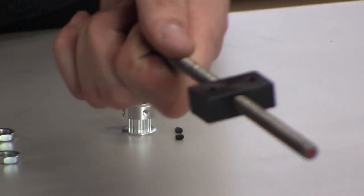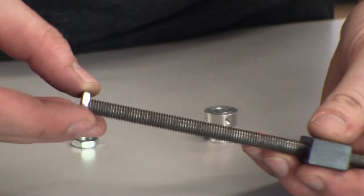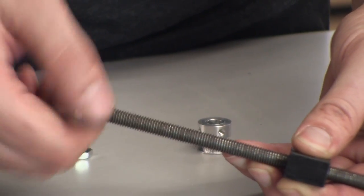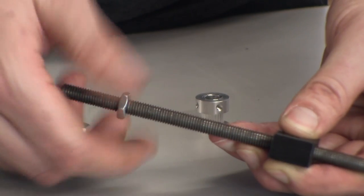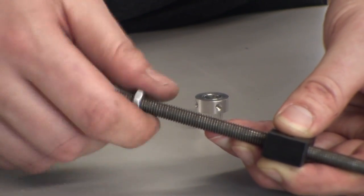After the nut has traversed the length of the threaded rod a few times, leave it about halfway down and thread one of the M8 hex nuts about an inch and a half to two inches down the threaded rod.